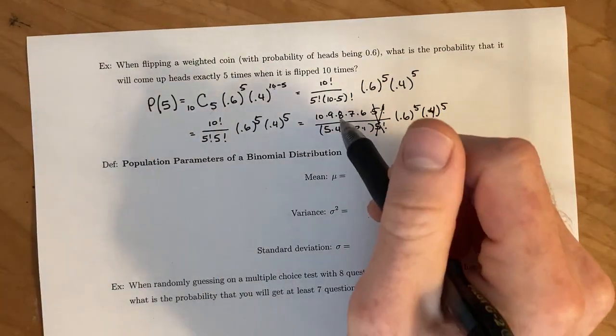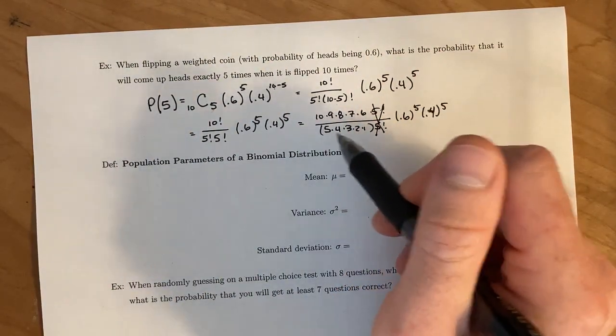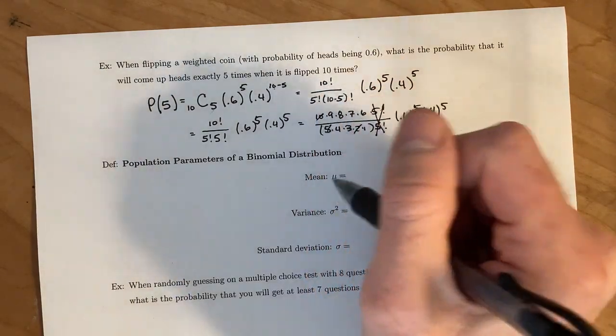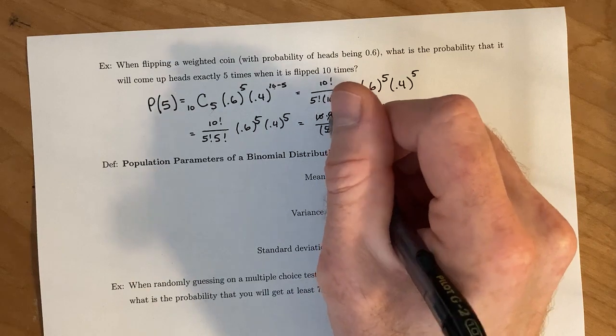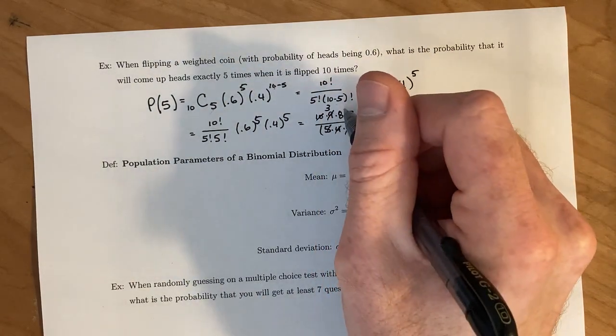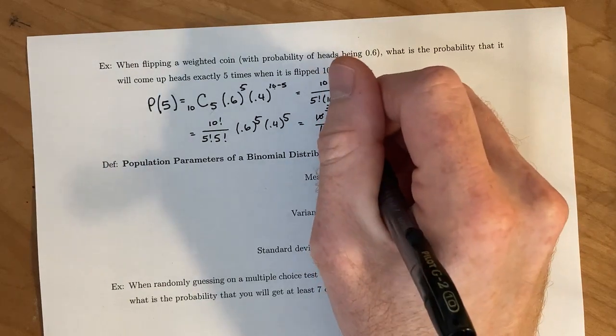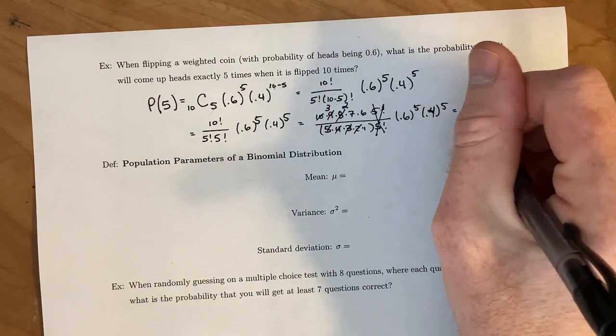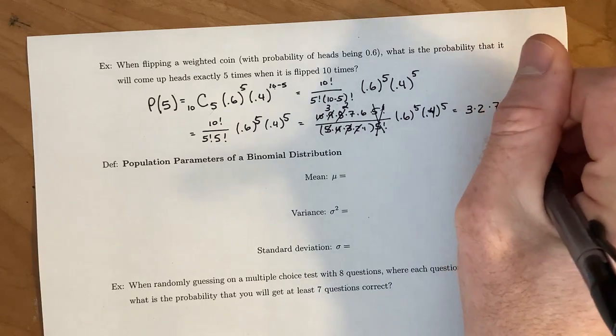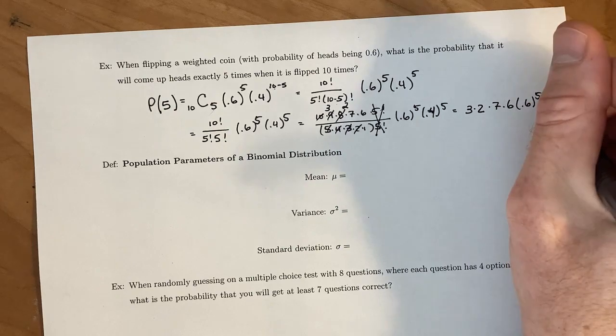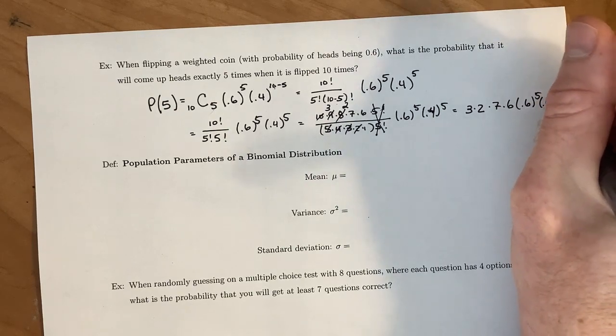then we just start to look and see what else we can cancel out. So I see 2 and 5 gives us 10. 3 goes into 9, leaving us with a 3 on top. And 4 goes into 8, which gives us a 2 on top. So altogether, this is the same thing as 3 times 2 times 7 times 6 times 0.6 to the 5th power times 0.4 to the 5th power.